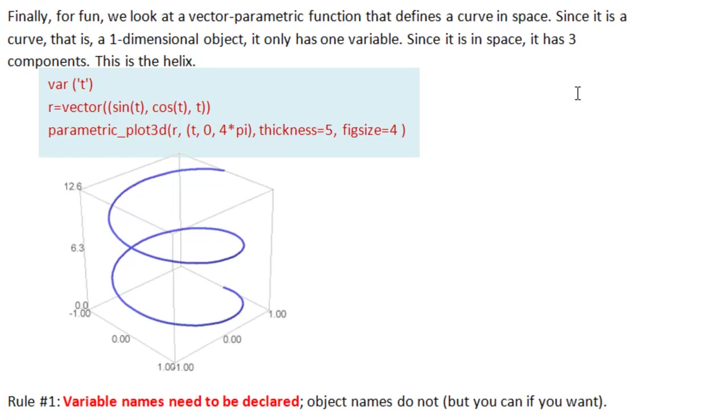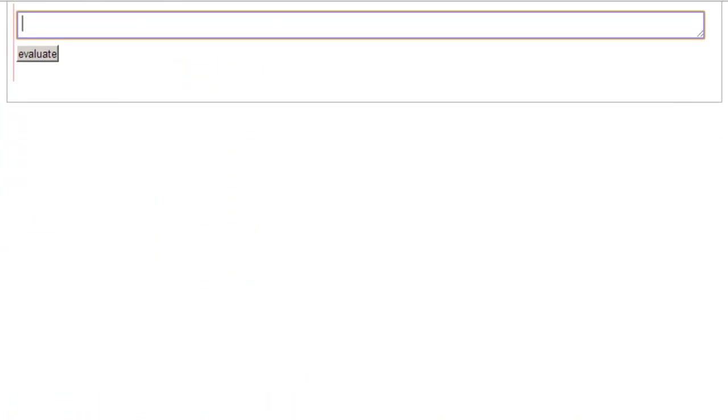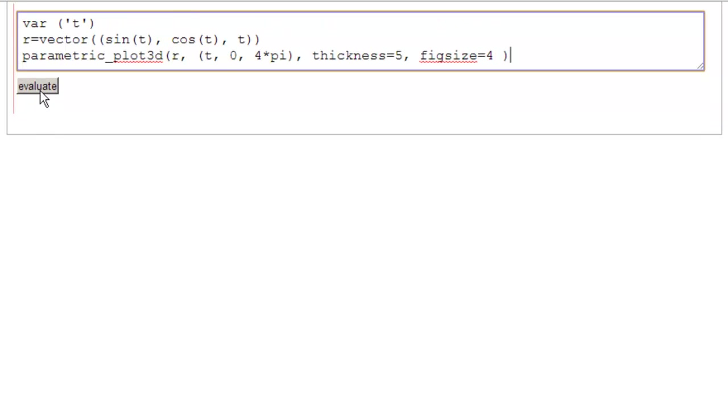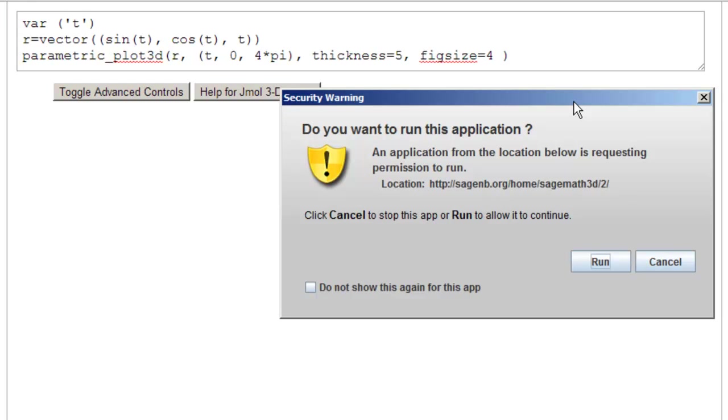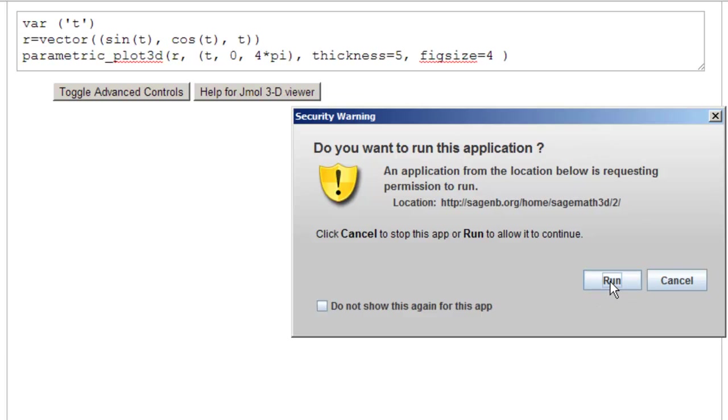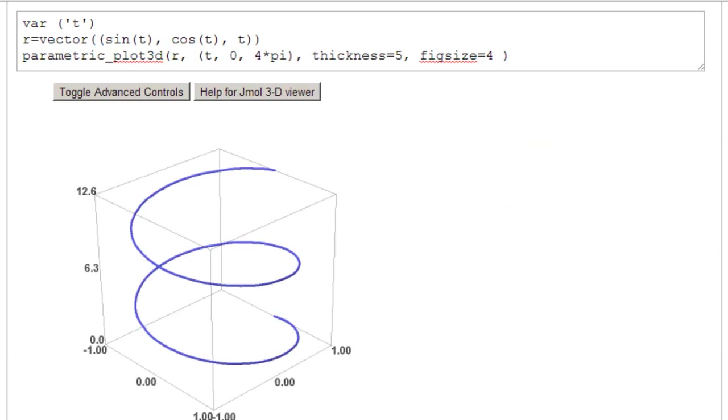Now r, don't write r of t, that won't work. r is vector and then the double parentheses, sine of t, cosine of t, t. Those are the 3 components that will make it go into space. And then a vector parametric function is defined using the word vector, but graphed using parametric. So parametric plot 3d, because it's in 3d. The function is r, and of course we need to have the range on the variable. And then I added the thickness and the figure size so that it would actually draw. So let's take our code and see that it works. Paste in our code and evaluate. Now remember, because Java is having security problems, we have to click on run. And there it is.